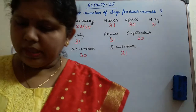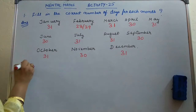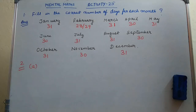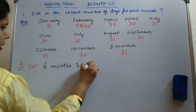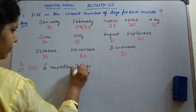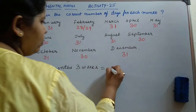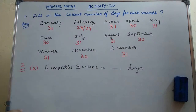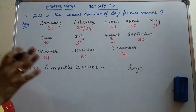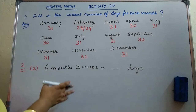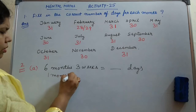Now come to the next question — it is to convert the following into days. Remember this: whenever the name of the month is not specified, you have to take the number of days as 30. It is the default number of days for every month. So we will take 1 month equal to 30 days. And 1 week — from Sunday, Monday, Tuesday up till Saturday — comprises 7 days, so 1 week equals 7 days.